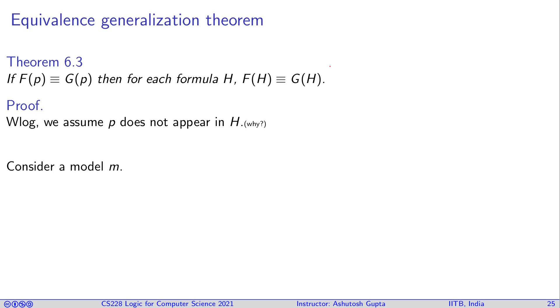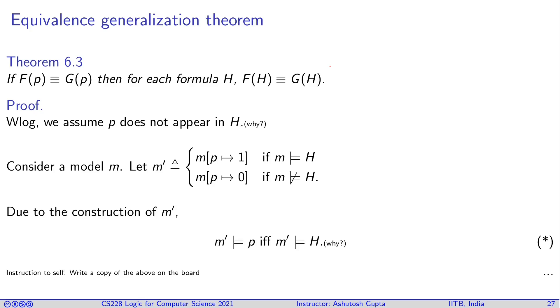Consider a model m. In this model, you can construct another model m' in the following manner: change the value of p in model m this way—if m satisfies H, set p to 1; if m does not satisfy H, set p to 0. Now the value of m' is changed from m, but remember that H has no p, so m' satisfaction with respect to H remains the same as m satisfaction with respect to H. Due to construction of m', we have ensured that m' satisfies p if and only if m' satisfies H.